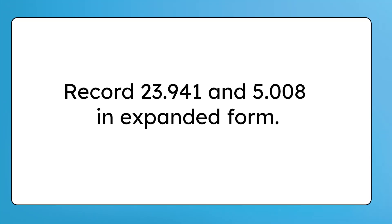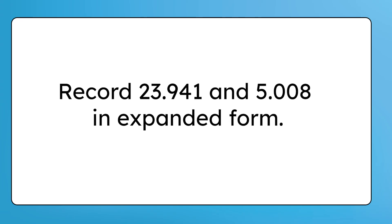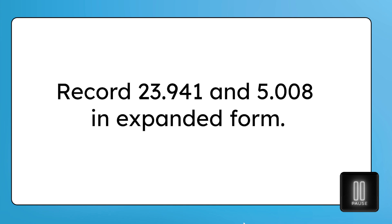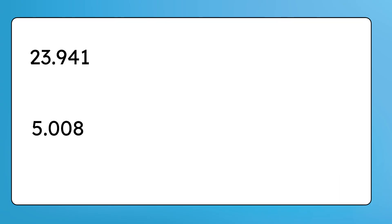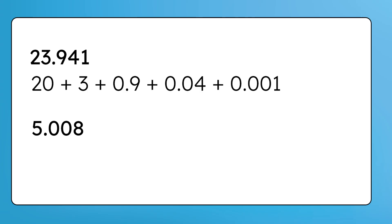Now let's record twenty-three and nine hundred forty-one thousandths and five and eight thousandths in expanded form. Pause the video here to record your thinking. Each digit in a number represents a different value based on its place. Twenty-three and nine hundred forty-one thousandths has digits in the tens and ones places, so we start with twenty plus three. After the decimal point, we add nine tenths plus four hundredths plus one thousandth. Since the decimal part can't stand alone, we include a zero in the ones place as a placeholder for each of those decimal values. And five and eight thousandths is five plus eight thousandths.